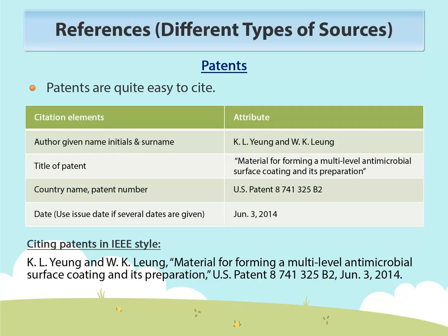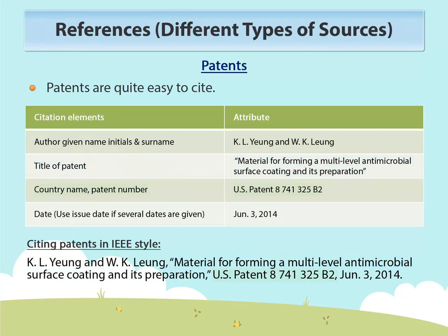Patents are quite easy to cite. The basic elements of a reference for a patent include author name, title of patent, country name, patent number and issue date.